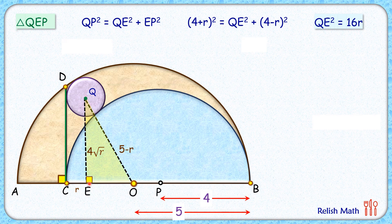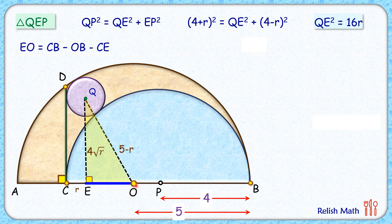Now in this triangle QEO, if we can find the length EO in terms of r we can apply Pythagoras theorem to get the value of r. EO length is the full length CB minus OB minus CE. Here CB length is 8 cm—diameter of blue circle—OB length is 5 cm, and CE length is r cm. So EO is 3 minus r.